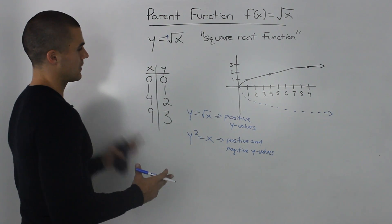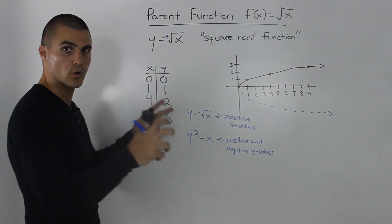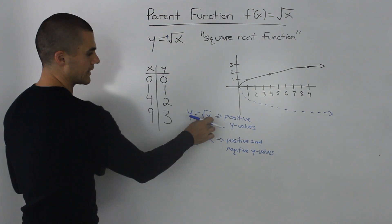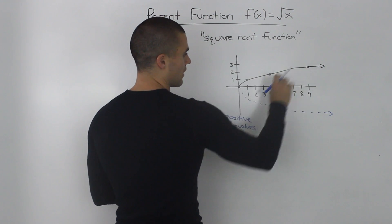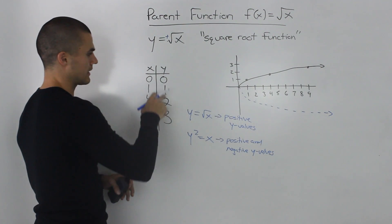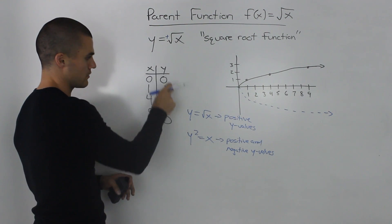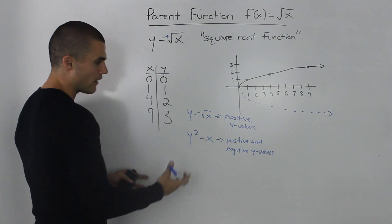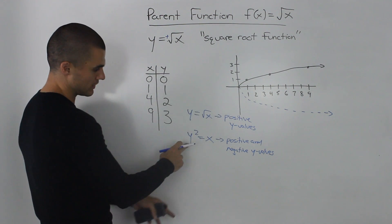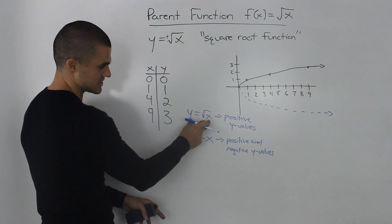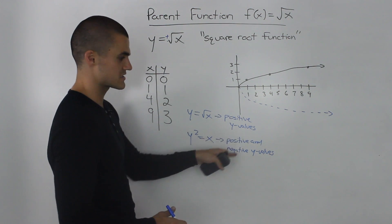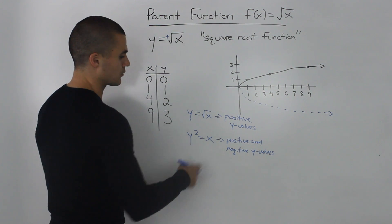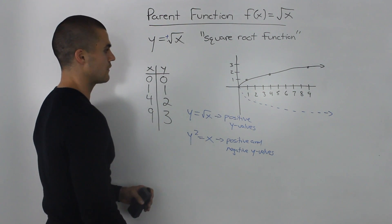Okay, so basically the thing to remember is if you're given a quote-unquote function and it's in this form, square root of x, you're only dealing with the positive y values. Don't put any negative y values for the dependent variable. However, if this was instead rewritten as y squared equals x, which is the same thing, then we would deal with positive and negative y values and this would just be a relation, it wouldn't be a function.